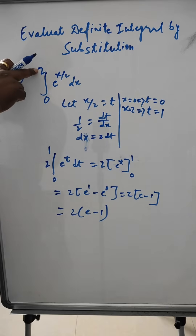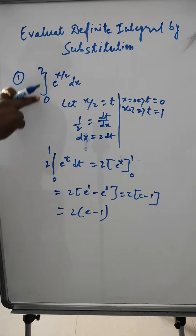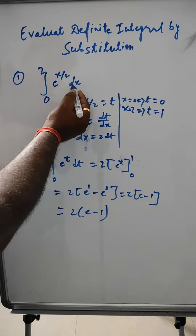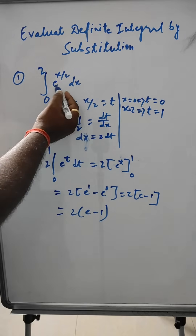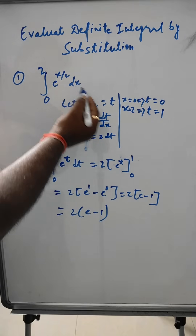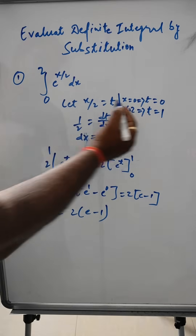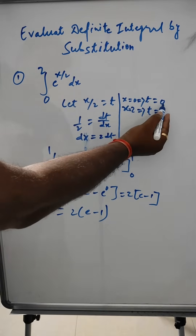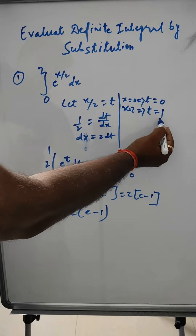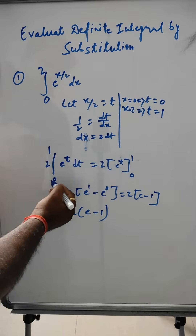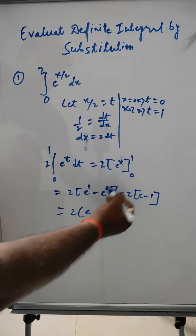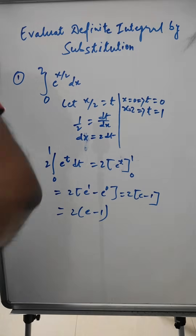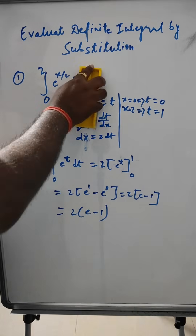Take care when changing limits: here the original limits were 0 to 2 in terms of x, and they become 0 to 1 in terms of t. When x = 0, t = 0; when x = 2, t = 1. I hope this is clear.